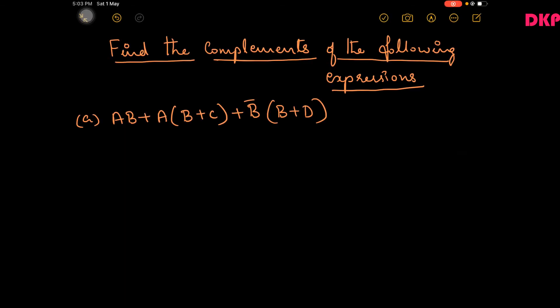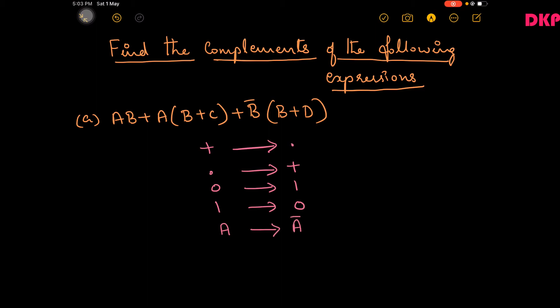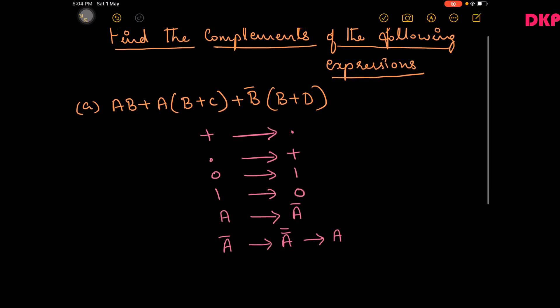Now let us see how to find the complement of a given expression. In order to find the complement we have to change ORs to ANDs, ANDs to ORs, 0 to 1, and 1s to 0. The variables also should be complemented — that is, the complement of a is ā, and the complement of ā is a double bar which equals a.